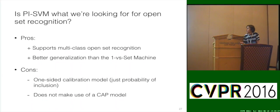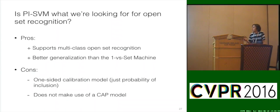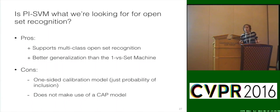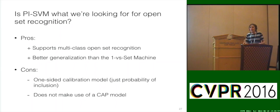Is the PI SVM what we're looking for for open set recognition? Pros: it supports multi-class open set recognition because we can iterate over all the probabilities for all known classes and apply the threshold, and it gets better generalization than the one-versus-set machine — the EVT calibration helps a lot. Cons: it's a one-sided calibration model — we only modeled the probability of inclusion and forgot about the negative side. And it doesn't make use of a CAP model, which we said is very important.